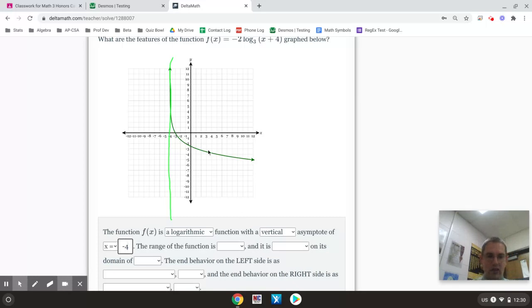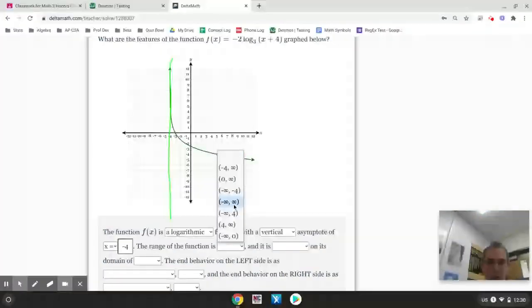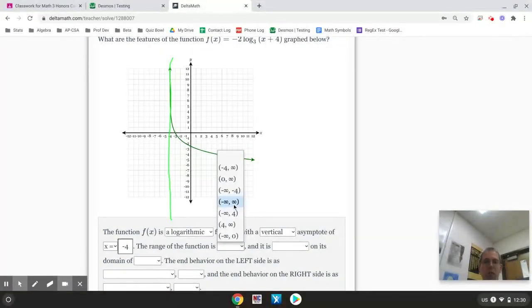Now, their range. The range of this function, since it does not have any limits, any asymptote, it's going to be all real numbers. So, the range is going to be all real numbers, which is negative infinity to positive infinity.